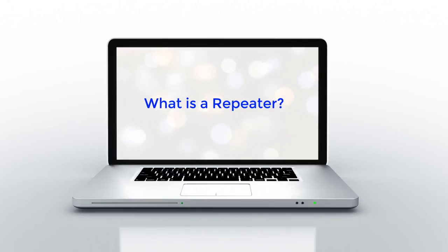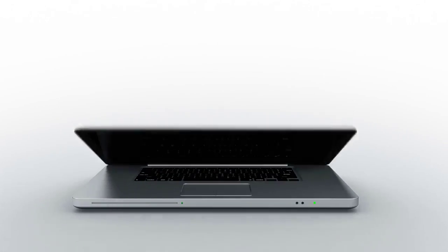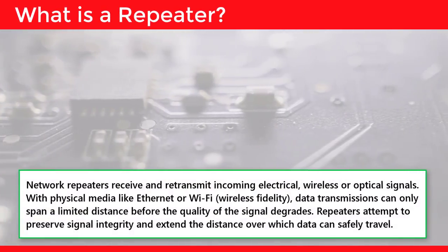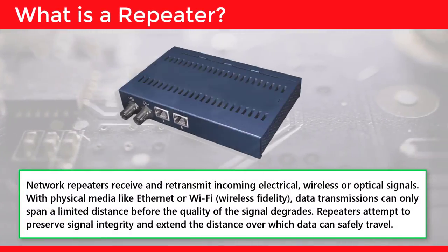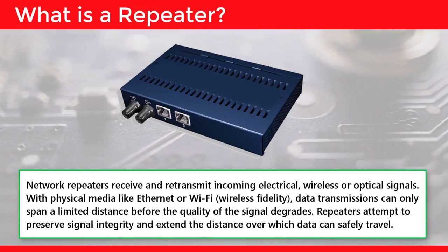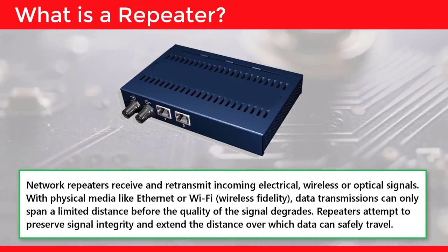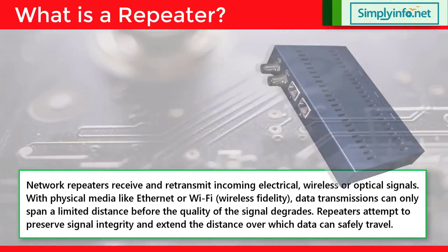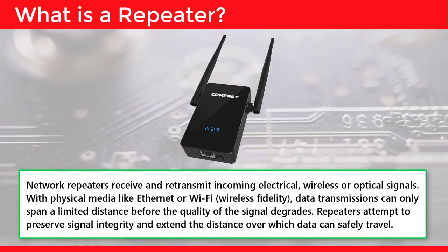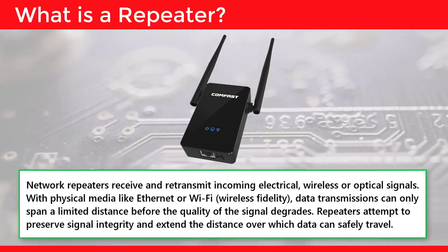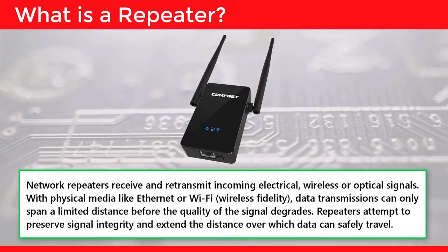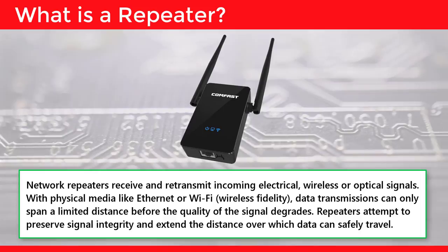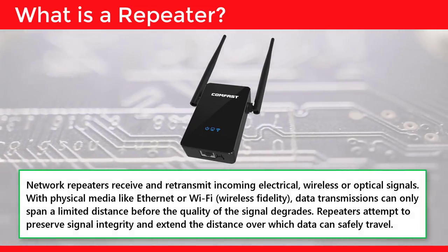What is a repeater? Network repeaters receive and retransmit incoming electrical, wireless, or optical signals. With physical media like Ethernet or Wi-Fi, meaning wireless fidelity, data transmissions can only span a limited distance before the quality of the signal degrades. Repeaters attempt to preserve signal integrity and extend the distance over which data can safely travel.